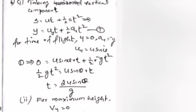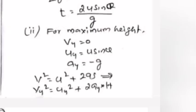For maximum height, v_y equals 0, u_y equals u sin theta, a_y equals minus g. Using v squared equals u squared plus 2ah: 0 equals (u sin theta) squared plus 2 times minus g times h. Therefore 2gh equals u squared sin squared theta, giving h equals u squared sin squared theta by 2g.